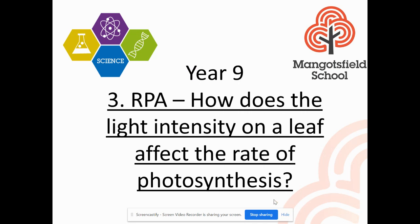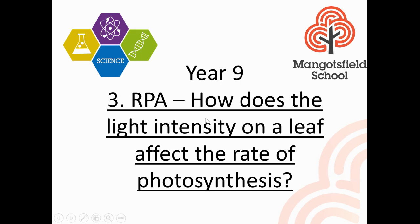Good morning Year 9. Welcome back to the plants unit. The previous two lessons we looked at the cell structure of the leaf and also photosynthesis. Today we are looking at photosynthesis again, but specifically how can we measure it happening in a different way, and specifically the question: how does the light intensity on a leaf affect the rate of photosynthesis?